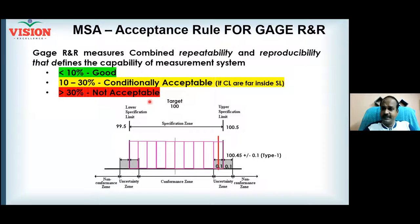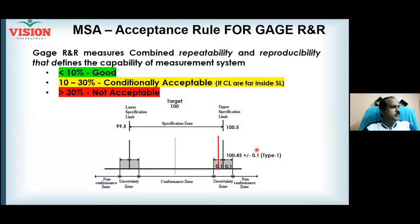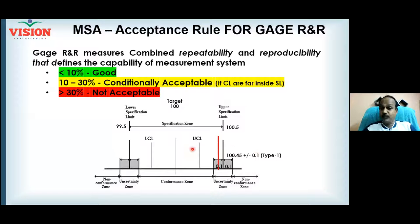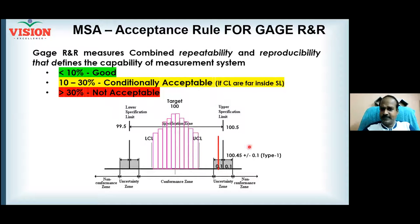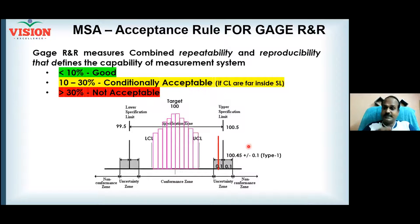The solution is: don't produce parts close to the specification limit. Try to produce everything towards the center. That is why it is always important to keep your control limits well inside the specification limit. When control limits are well inside the spec and you apply a 10% measurement error, a good product will not be rejected. This is how improving your measurement system helps in decision making.